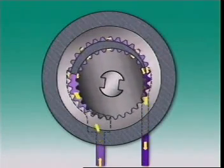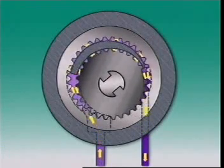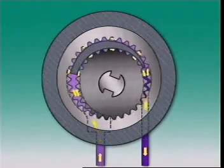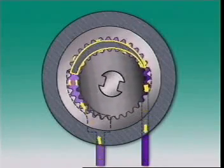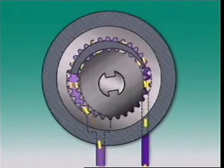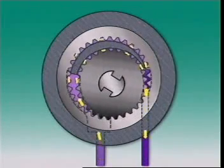An external toothed gear meshes with this inner one. Some gear teeth are meshed, but others are separated by the crescent shaped part of the pump housing. The increasing volume between gear teeth causes pressure to fall.